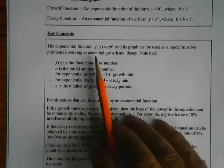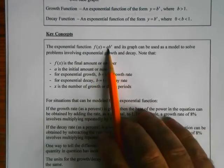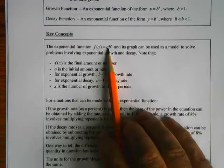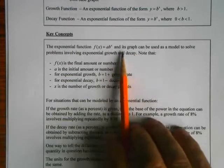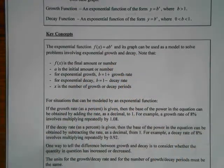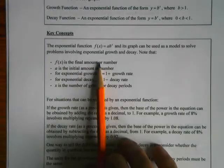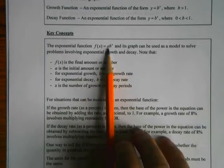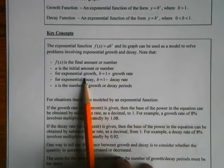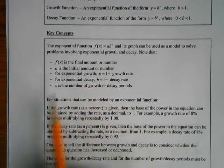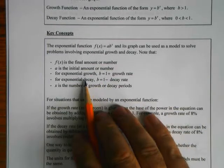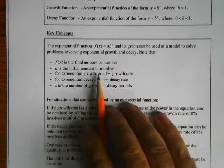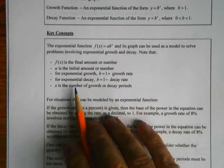The exponential function now has an 'a' added. The 'a' is the value you start at — you're not always starting at 1, sometimes you start at a higher or lower value. f(x) is the final amount, 'a' is the initial amount. In order to know what the b value is, a lot of times you're not given it directly — you're told either the growth rate or the decay rate.